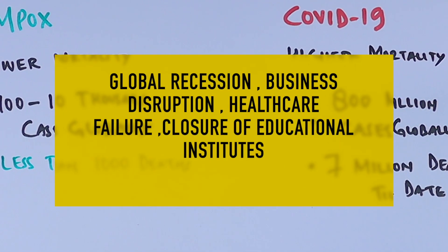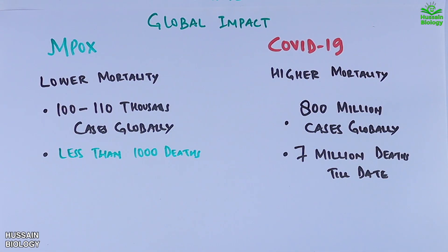In the case of COVID-19 there were global recession, business disruption, healthcare failure, and social impacts like closure of education institutes and many more. Whereas in the case of mpox, we have not seen such conditions.